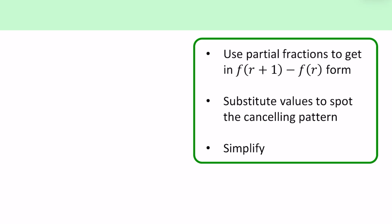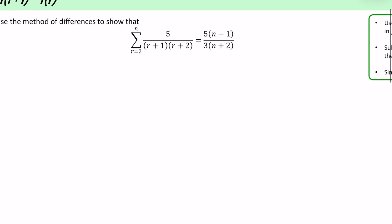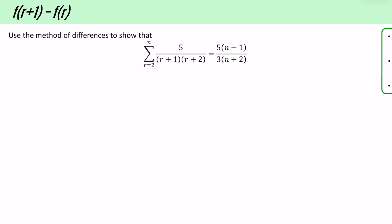So just a quick reminder of how we do these. You use partial fractions typically to get it into a form where you have a function and the same function, but there's just a slight difference in the input for them, which is going to give you a nice cancelling process. You then show some substitution of some different values to spot what that cancelling pattern is, and then you simplify. In the interest of keeping these videos nice and focused, I thought we would just do the method of differences part here.